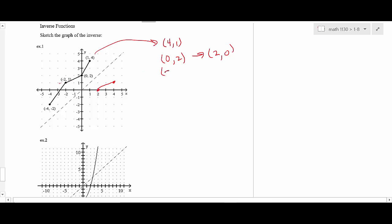And let's see, the other thing we have is negative 2, 1. So that's going to change into 1, negative 2. So you can plot that. And the last one is negative 4, negative 2. So that's going to change into negative 2, negative 4. And then when you plot that, that's what your inverse would look like.